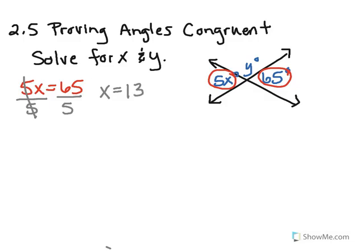Okay, so I have one of my answers. So how do I find out what y is? Well, keep in mind that those two angles, the one that is y and the one that is 65, have something in common. When I add those two together, I know that it makes a straight angle.